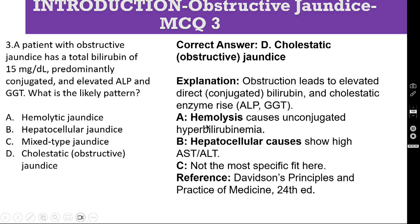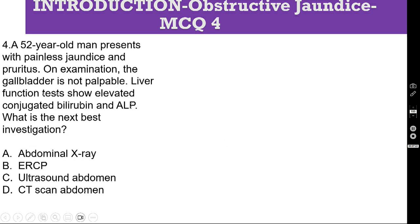A is incorrect because hemolysis causes unconjugated hyperbilirubinemia, not conjugated. B is also incorrect — hepatocellular causes show very high AST and ALT. C, mixed type jaundice, is not the most specific fit here. The cholestatic obstructive pattern is the correct answer. Reference: Davidson's Principles and Practice of Medicine, 24th edition.